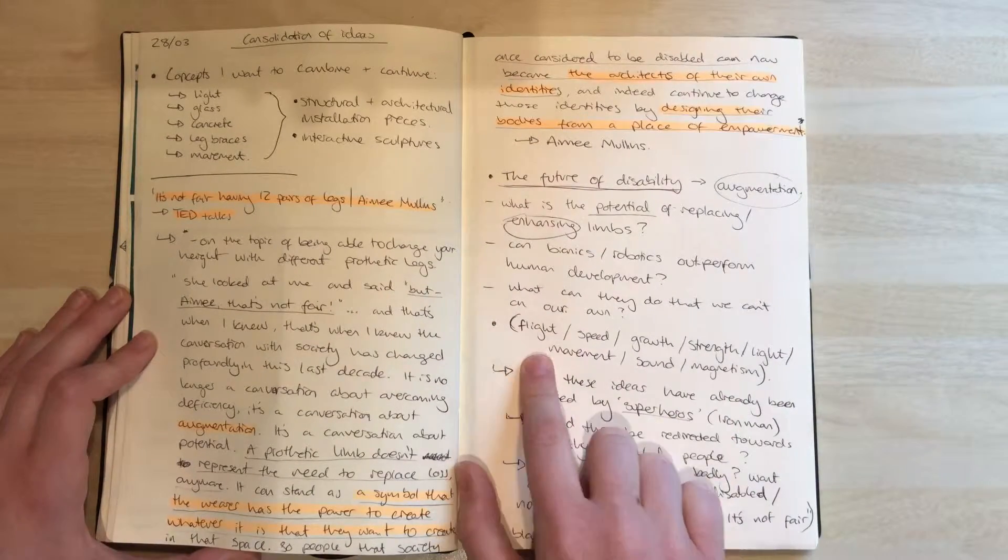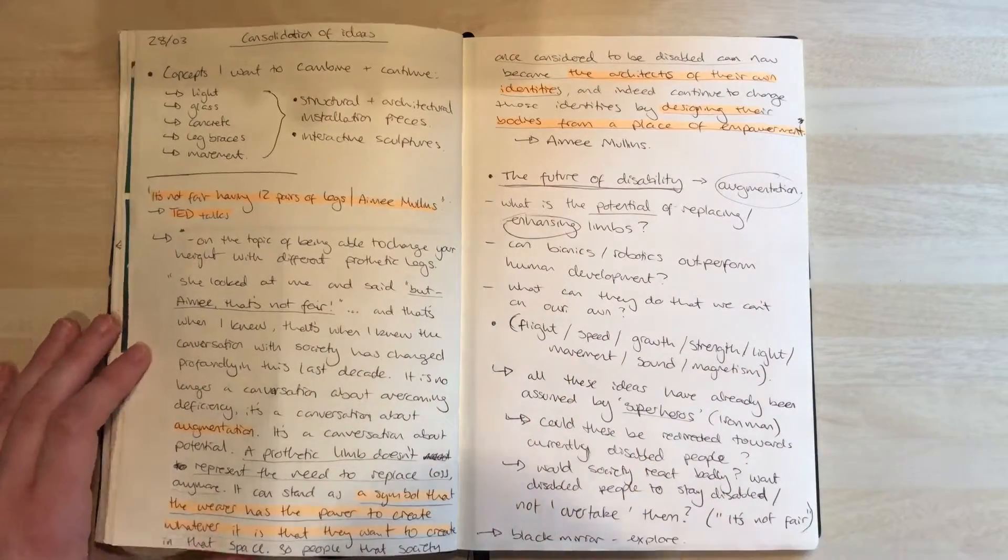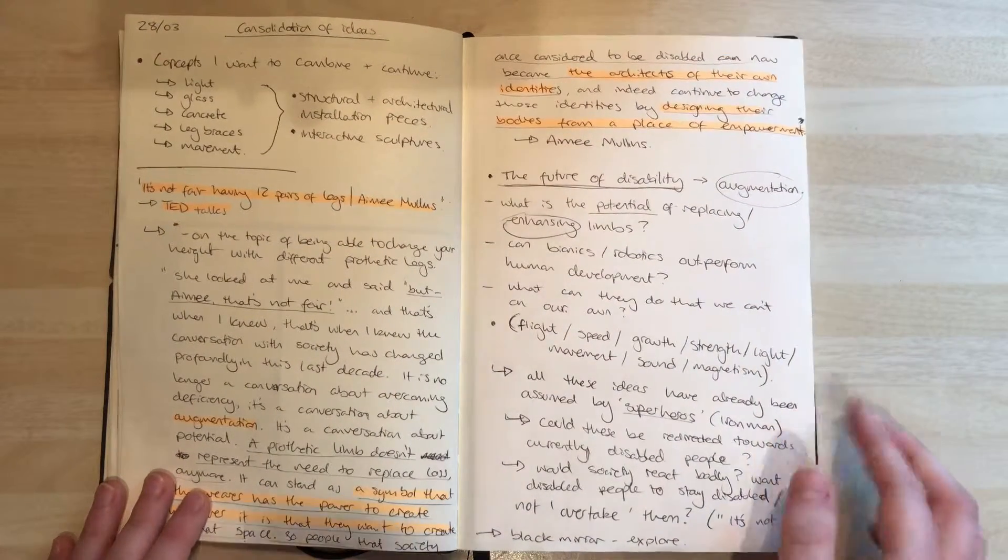Some of the notes that I've put down are things like flight, speed, growth, strength, light, movement, sound, magnetism, things like this that you often associate with superheroes. Why can't we make this a reality?